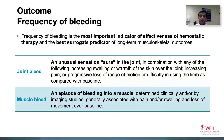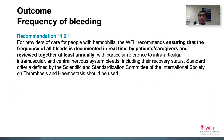A muscle bleed was defined as an episode of bleeding into a muscle, determined clinically and/or by imaging studies, generally associated with pain and/or swelling and loss of movement over the baseline. The WFH recommends ensuring that the frequency of all bleeds is documented in real time by patients or caregivers, preferably with a bleed diary, and reviewed together at least annually, with particular reference to intra-articular, intramuscular, and central nervous system bleeds, including their recovery status.